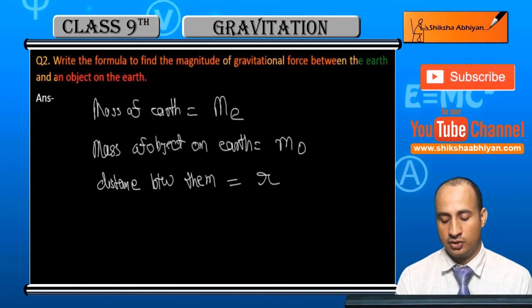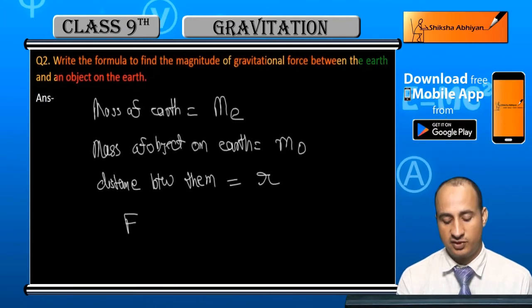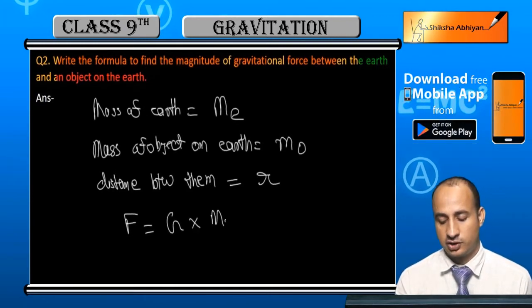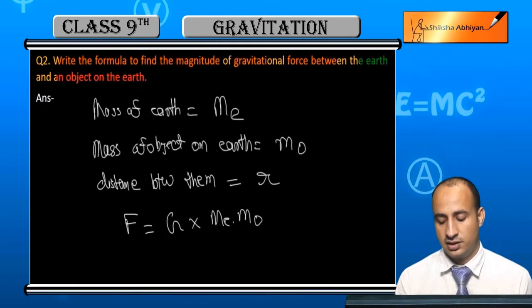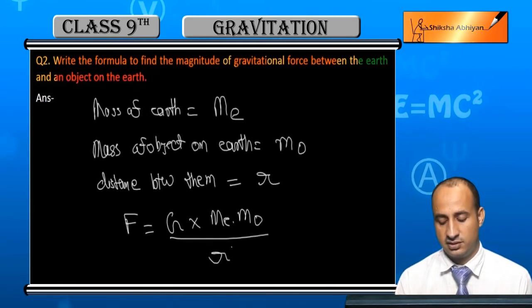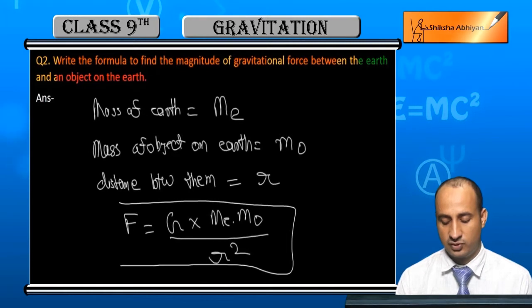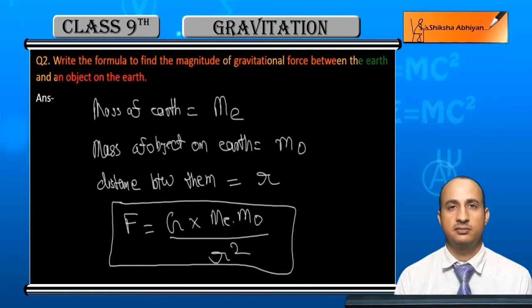So here, the force between them is: Force is equal to G into product of their masses upon r square, the distance between them. This is the final force formula.